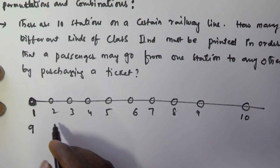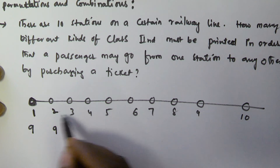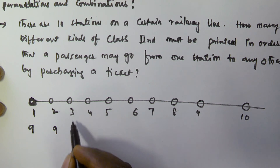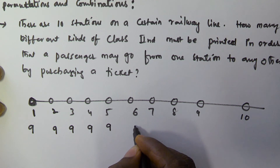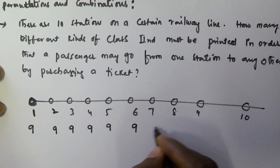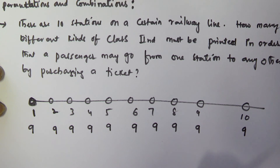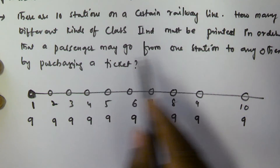In the same manner, the second station must contain nine different tickets — to go from two to one, two to three, two to four, two to five, and so on. The third, fourth, fifth, and every station must also contain nine different kinds of tickets to go from that station to the remaining nine stations.